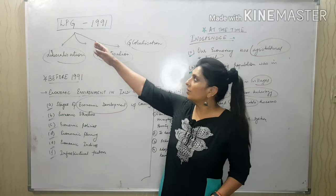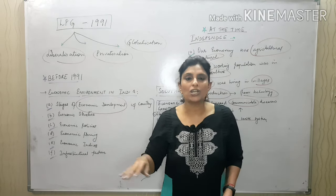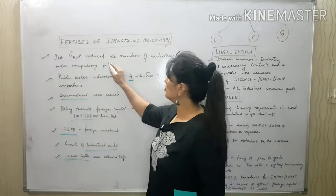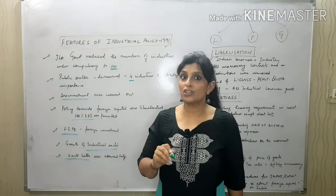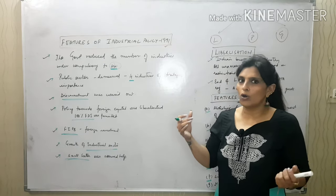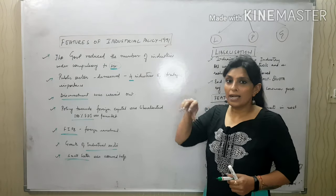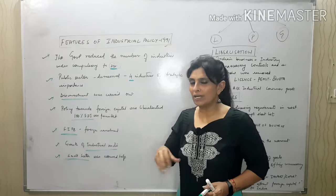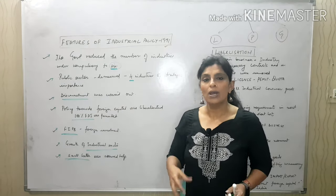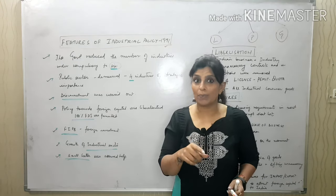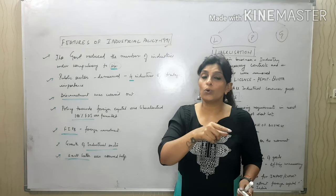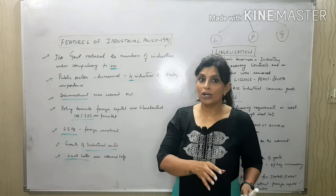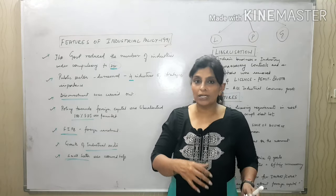By the late 1980s — around 1989-90 — things were not up to the mark, so change was required, and LPG happened, bringing remarkable change. Under the Industrial Policy 1991, the government reduced the number of industries under compulsory licensing. Only four industries of strategic importance were given to the public sector and the rest were privatized. Disinvestment was carried out — public sector shares were sold to the private sector. Public sector means government-controlled entities like departmental undertakings, statutory corporations, and government companies.